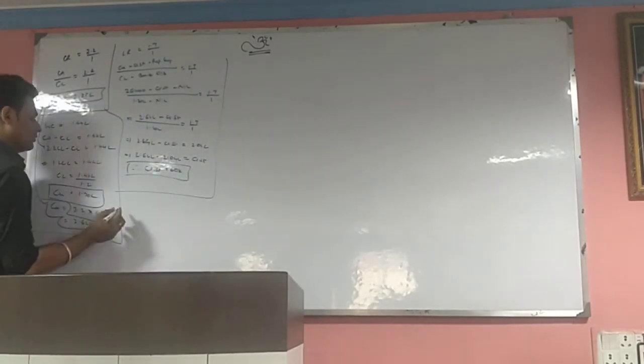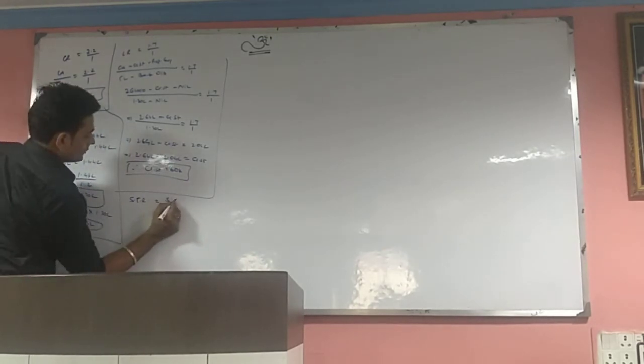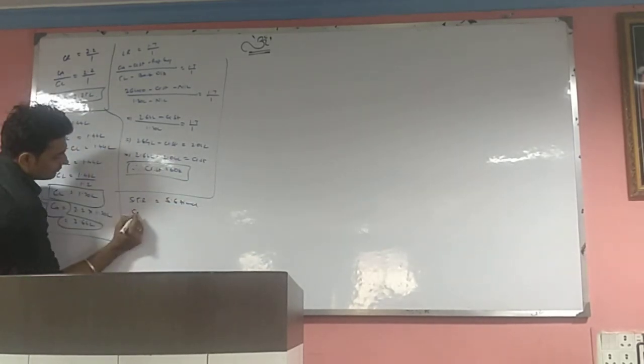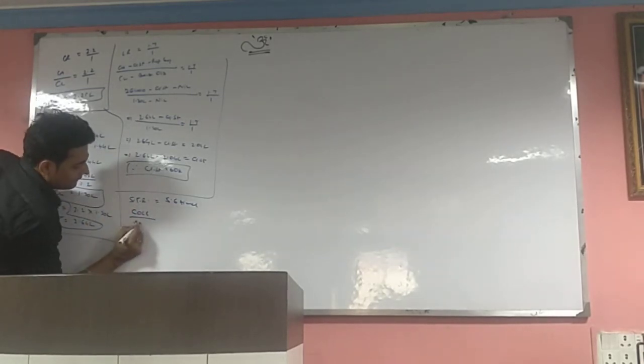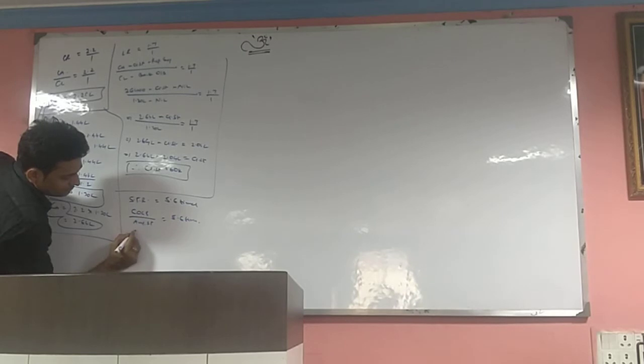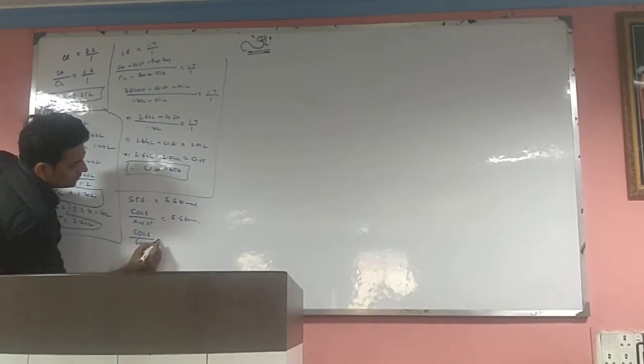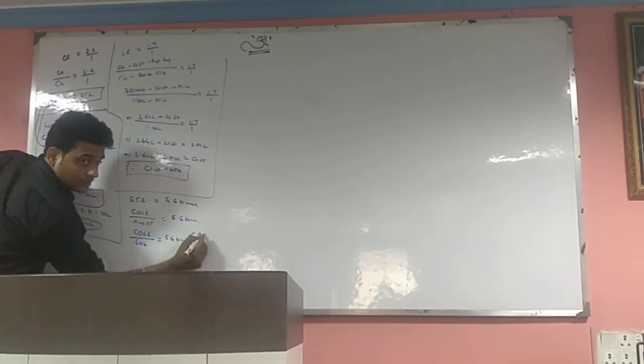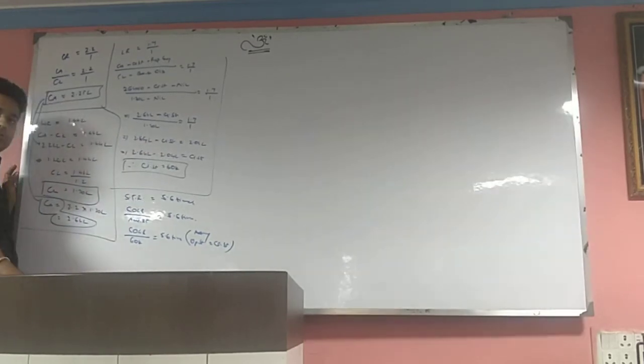Stock goes into stock turnover ratio, 5.6 times given. Formula is COGS divided by average stock equals 5.6 times. COGS we don't know. Average stock - we have closing 60,000, but opening? Note here: assuming opening stock equals closing stock.